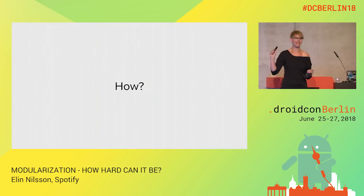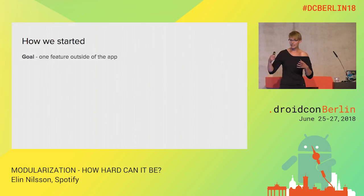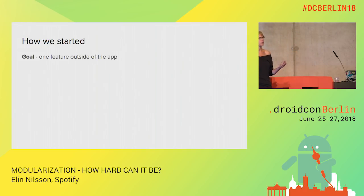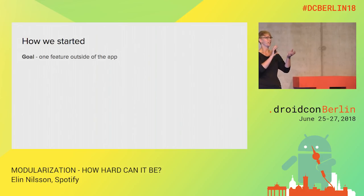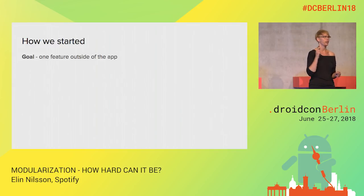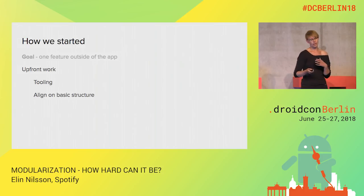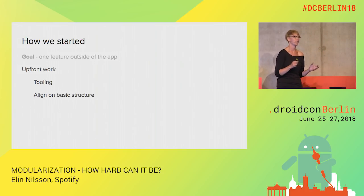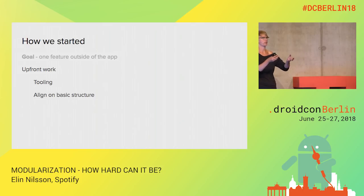This story is about our main monolith module. The team created a goal: get one feature outside of the main app. It was a small, seemingly contained feature that no one had touched in years. A sub-goal was to run unit tests for that feature in under five seconds. We started with some upfront tooling — a script to create a module, set up build Gradle files, add it to the settings Gradle file, give it a name and you have a module.